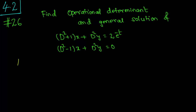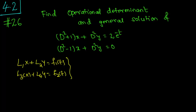Let us recall that if we have the system: L1·x + L2·y = f1(t) and L3·x + L4·y = f2(t), then the operational determinant is the determinant of the matrix [L1, L2; L3, L4], which equals L1·L4 minus L2·L3.